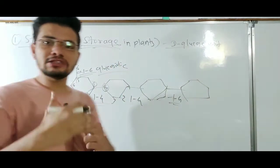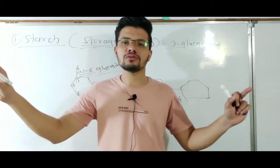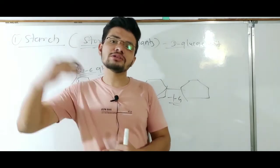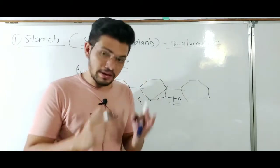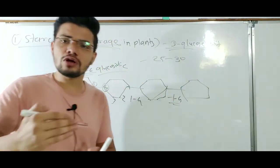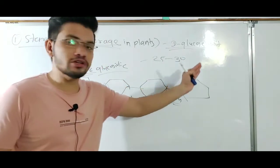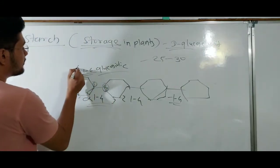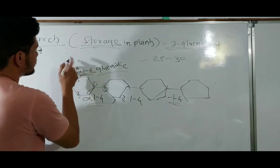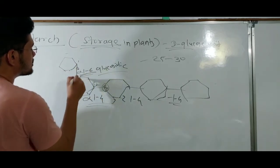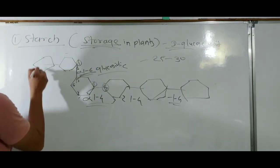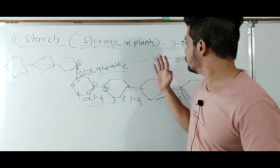There is also alpha-1,6 glycosidic bond present in starch, which is involved in the branching. So starch is not a linear molecule — it is a branched polysaccharide. Branches occur after every 25 to 30 units of D-glucose, and these branches are formed with the help of the alpha-1,6 glycosidic bond, where the sixth carbon forms a bond with the first carbon of another sugar.